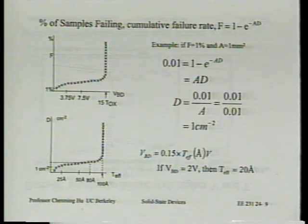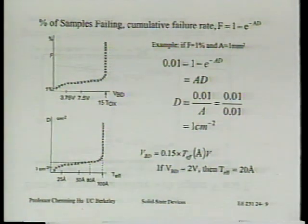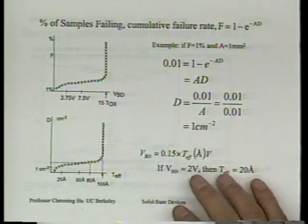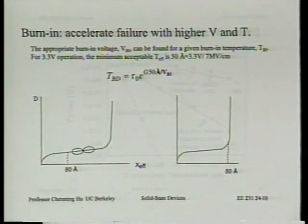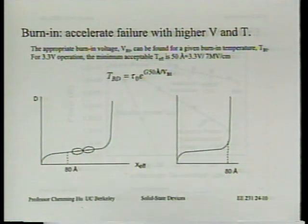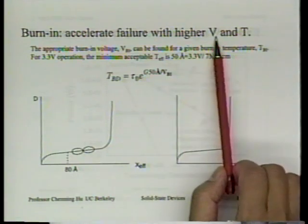Suppose it predicts that 20% of your product will fail in three years. The best thing is to go back to the fab and improve your oxidation process. But another powerful technique is burn-in. Even if only 3% are predicted to fail, that's too large. So you can get rid of that 3% through a process known as burn-in — which really means accelerating failure with higher voltage and higher temperature.